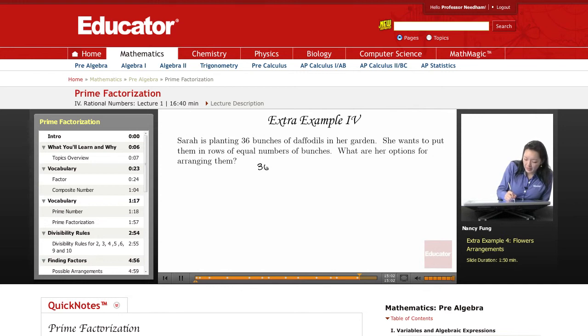So let's come up with all the different ways that we can get 36. 1 times 36, 2 times 18, 3 times 12, 4 times 9, 5 doesn't work, and 6 times 6.